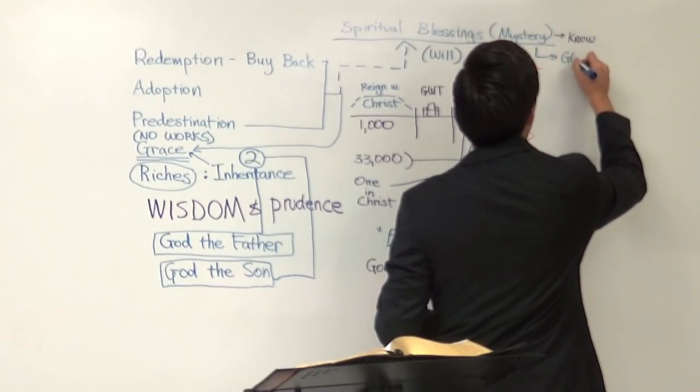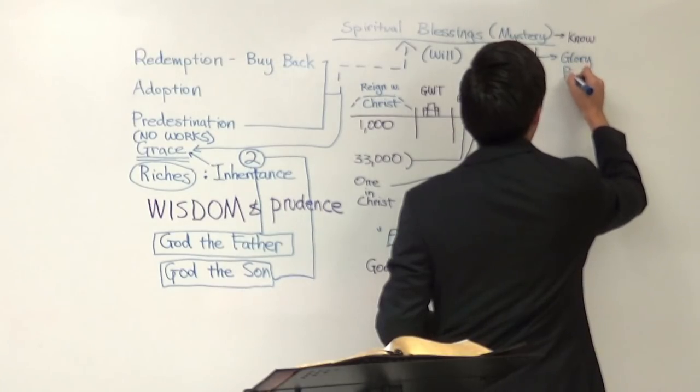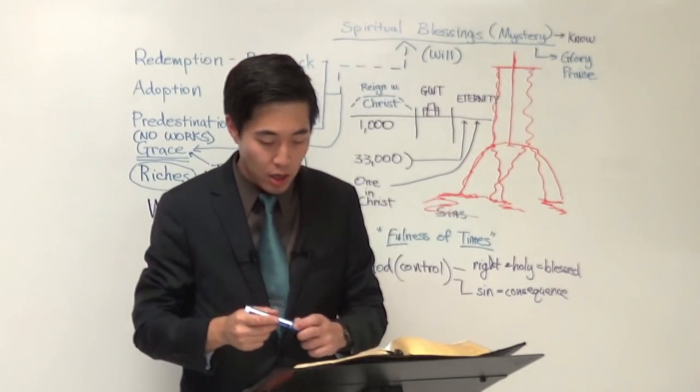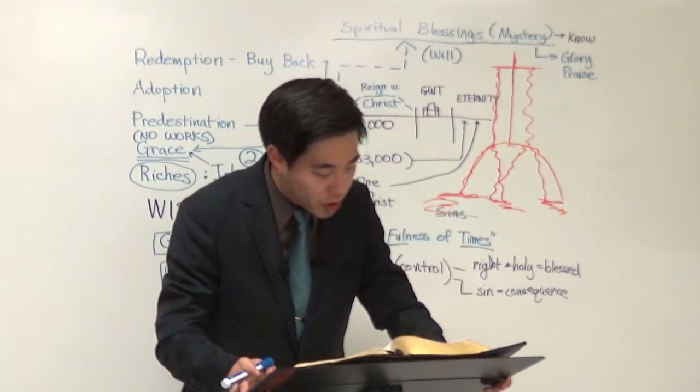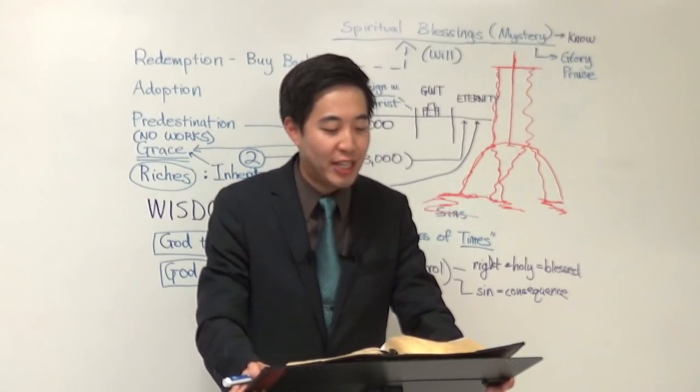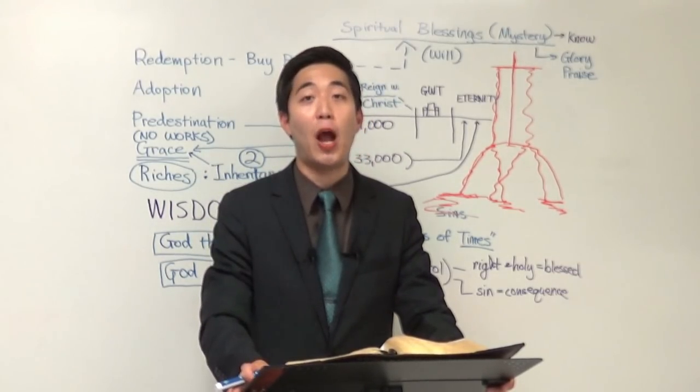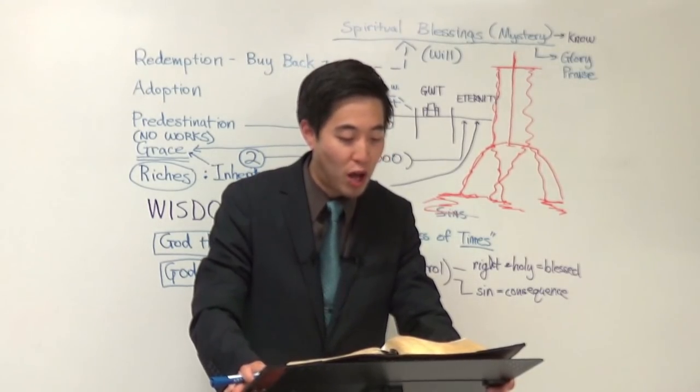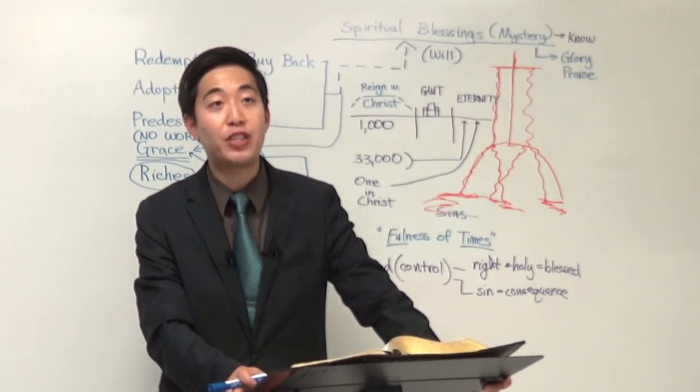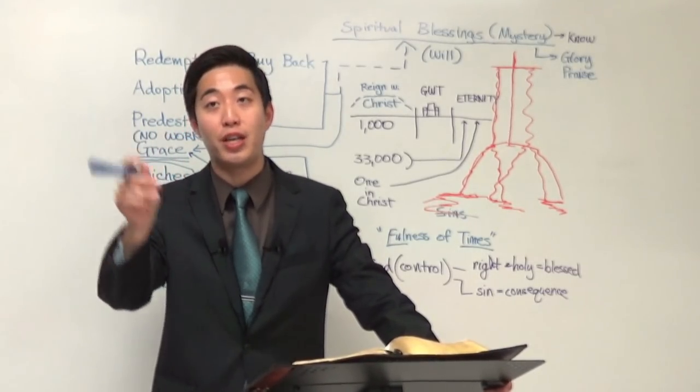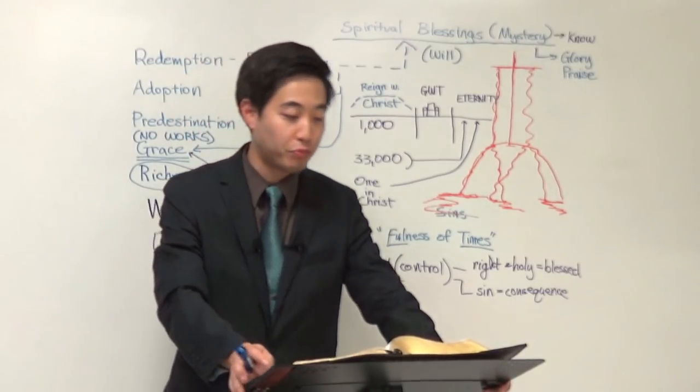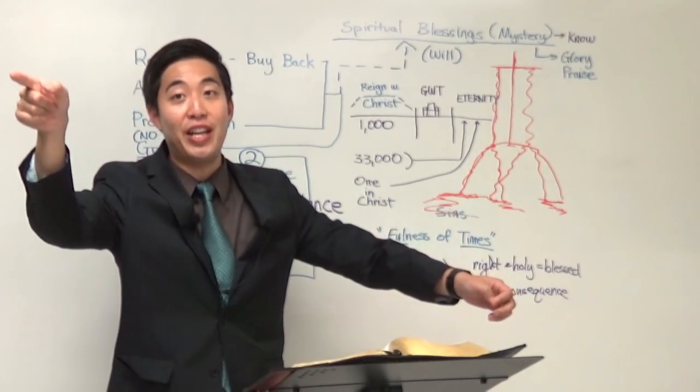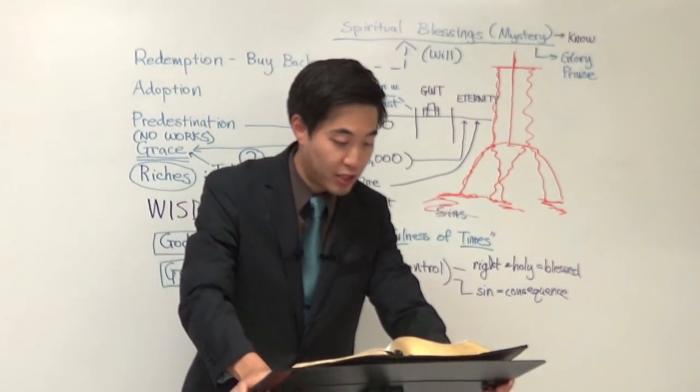So guess what? You and I are going to praise and glorify God when we get up there. In Ephesians 1:12 is a fulfillment. It is a fulfillment of Revelation chapter 4 and chapter 5. Some of you don't know this, but Ephesians 1:12 is a prophecy. It is a prophecy to you Christians that you will be doing this at Revelation 4 and 5.